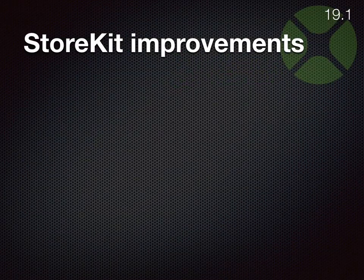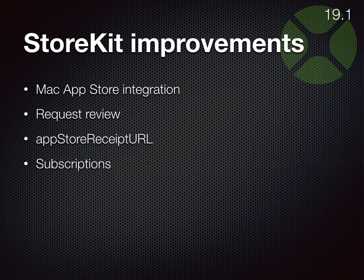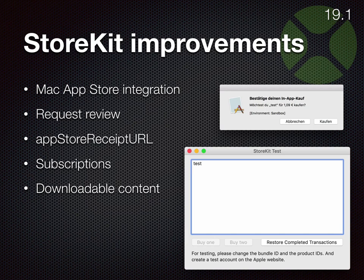We have improvements for StoreKit — Apple's framework for in-app purchases in the Mac App Store. We have a new dialog to request a review so you can ask the user to give your app a few stars. You can query the URL where the receipt for your app is stored. We have new functions for subscriptions so you can offer your application as a subscription and allow the user to sign up within the application. There is also the possibility to provide downloadable content — you upload files to Apple and they provide them to the user over their network. Here is the dialog to confirm a purchase, and our test application which shows the product names you defined.